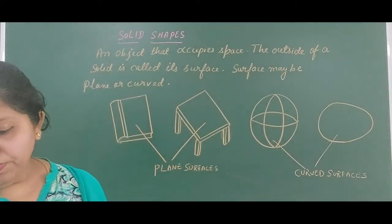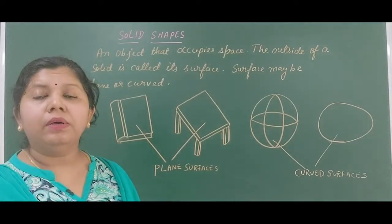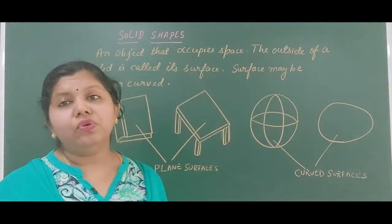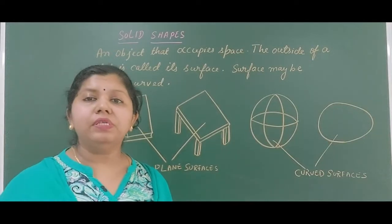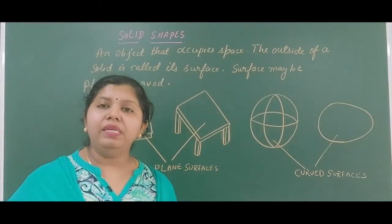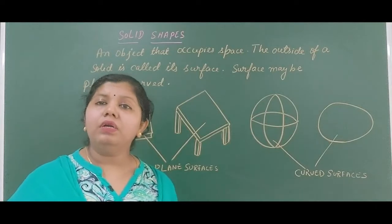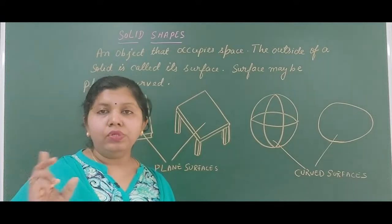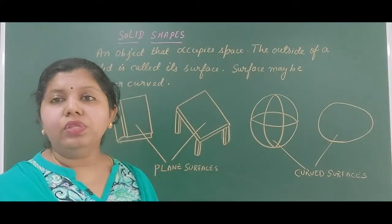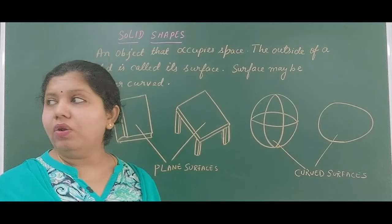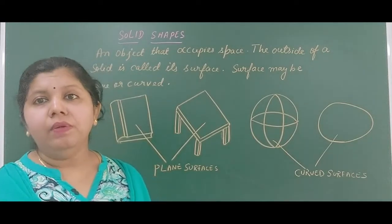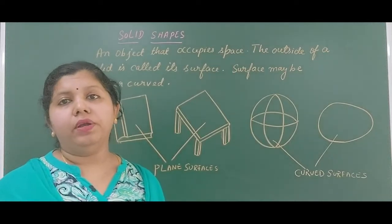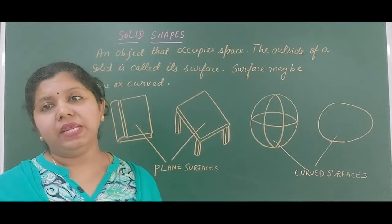Now we have different kinds of solid surfaces. The different types are either a plain surface or a curved surface. If you look at a ball, the outer surface of a cylinder, or a stone — these are all curved, not flat surfaces. But if you look at the outer cover of a book or a table, those surfaces are plain surfaces.